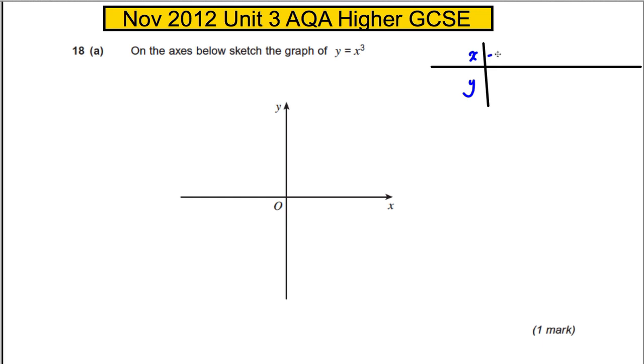Maybe you'd start on -3 for x: -3 cubed would be -27, then -2 cubed would be -8, -1 cubed would be -1, 0 cubed would be 0, 1 cubed would be 1, 2 cubed would be 8, 3 cubed would be 27, and you get the idea.